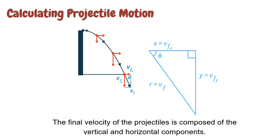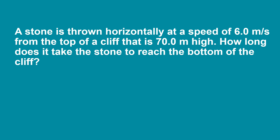This diagram shows that the final velocity of the projectile is composed of vertical and horizontal components. Using one of the kinematic equations, let us solve this word problem: A stone is thrown horizontally at a speed of 6 meters per second from the top of a cliff that is 70 meters high. How long does it take the stone to reach the bottom of the cliff?